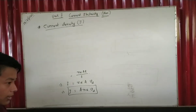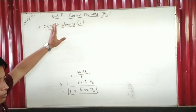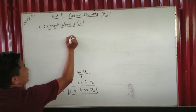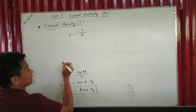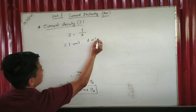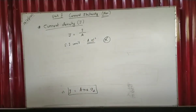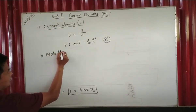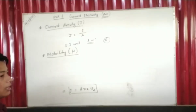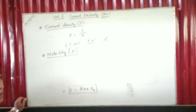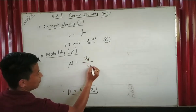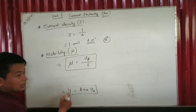Current density, denoted J (capital J or small j), is the ratio of current to the cross-sectional area. Mobility is the drift velocity per unit electric field applied — mobility equals drift velocity divided by the electric field.